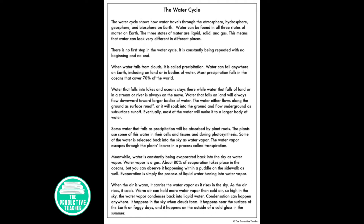Water that falls into lakes and oceans stays there, while water that falls on land or in a stream or river is always on the move. Water that falls on land will always flow downward toward larger bodies of water. The water either flows along the ground as surface runoff, or it will soak into the ground and flow underground as subsurface runoff. Eventually, most of the water will make it to a larger body of water.